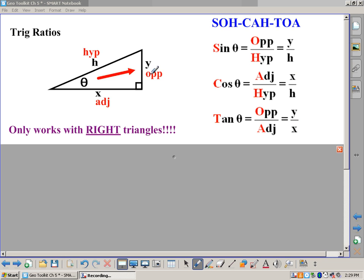One of them is opposite, one of them is adjacent. In this case, because of where theta is, opposite is y. But if we had an angle over here, in this case, x would end up being the opposite. It all depends on what angle we're talking about.